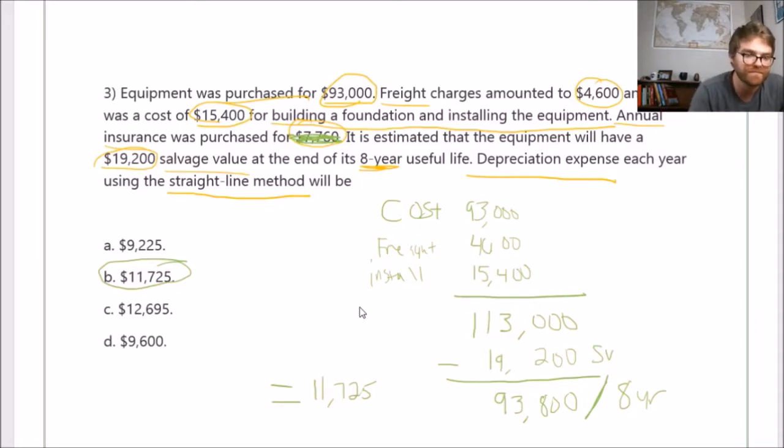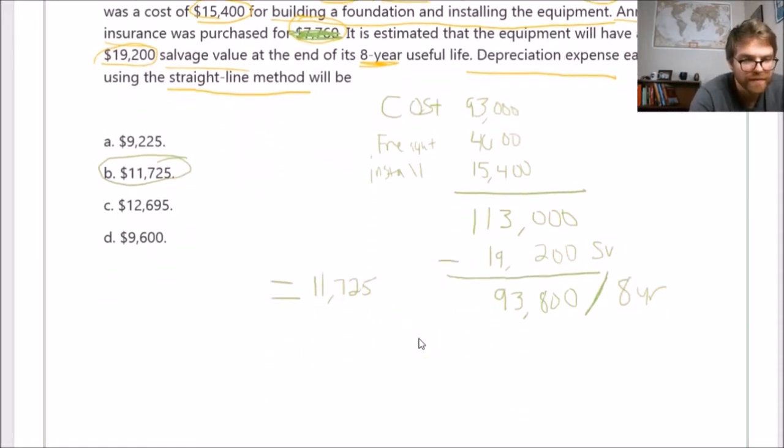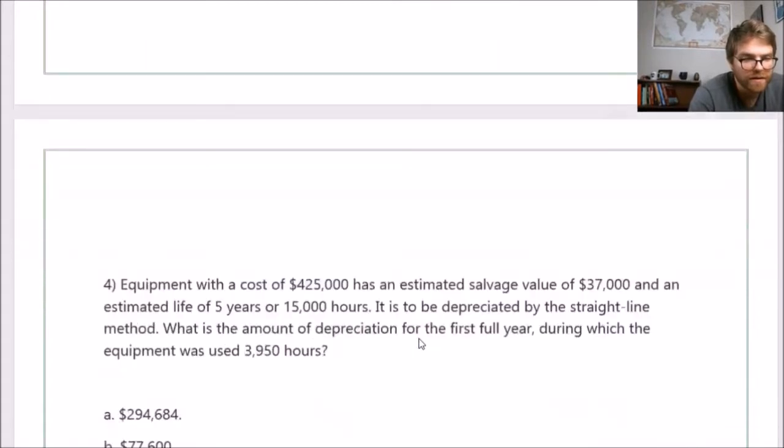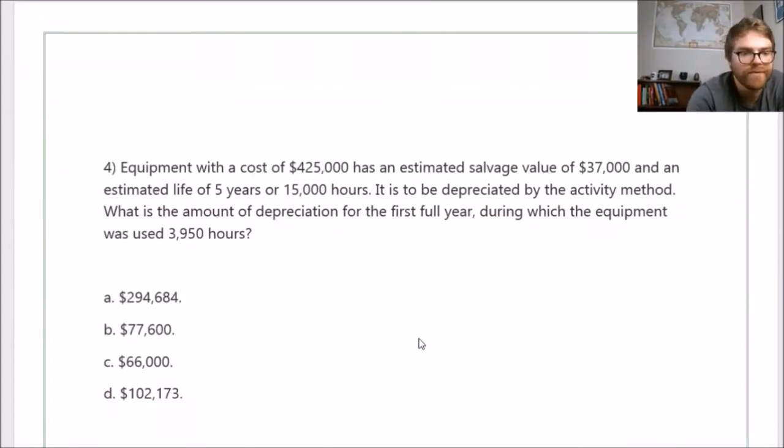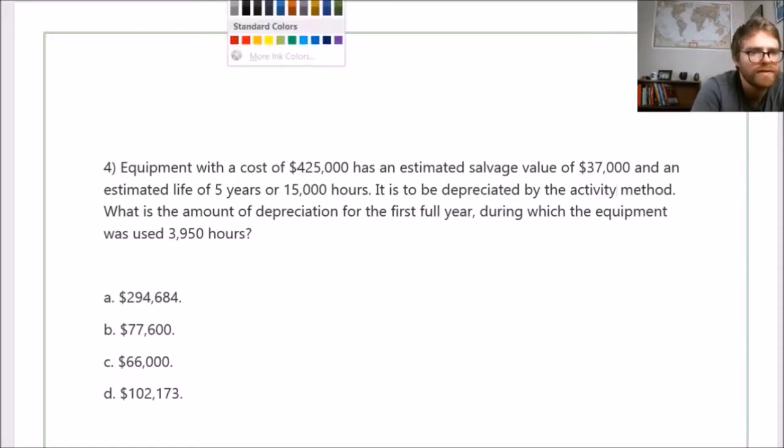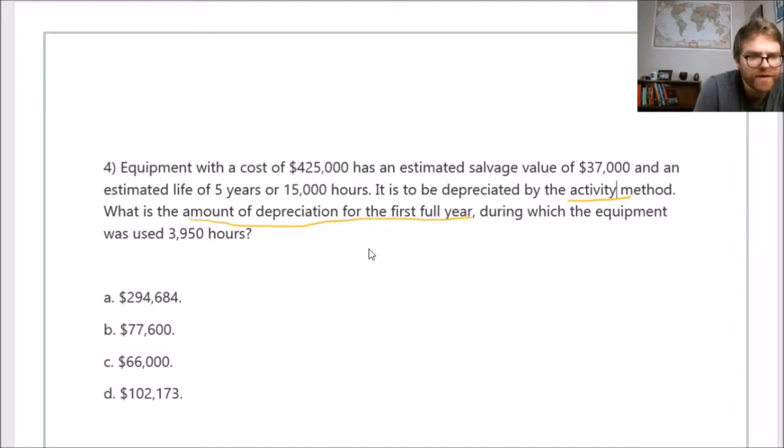Next question, number four. Now we're getting into the activity method. We want to know what's the amount of depreciation for the first full year during which the equipment had this many hours.